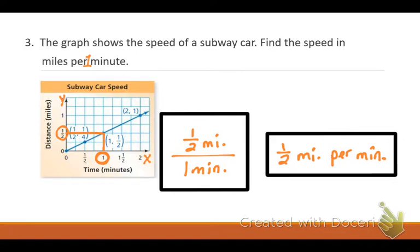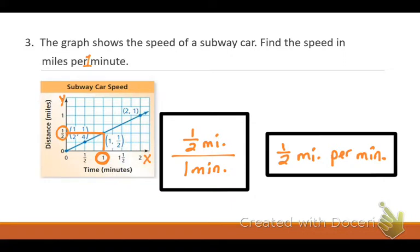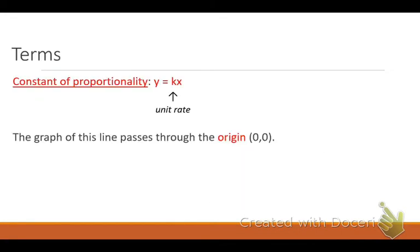Let me bump back to the constant of proportionality formula. This K stands for unit rate, and the unit rate is per one minute. Looking at the graph: if it was two minutes, they would travel one mile — because if they're going half a mile per one minute, they go a whole mile in two minutes. Now we're going to use the formula Y equals KX for our final problem.